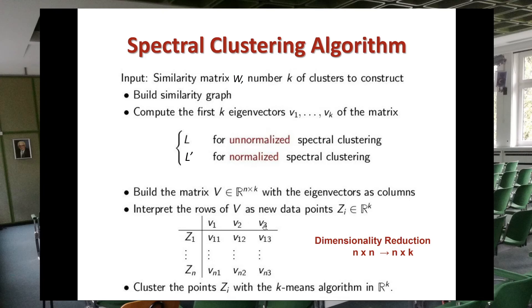Each row of this matrix will be an eigenvector. So if we consider that there are possibly three clusters, we compute three eigenvectors, and since we have n data points, these eigenvectors are of size n. By doing this we are performing dimensionality reduction, reducing our original n-by-n matrix to a matrix n-by-k. At this point, once you have generated this matrix, you consider each of the points as a vector in some dimension — for example, one point is represented by values v1,1, v1,2, and v1,3.